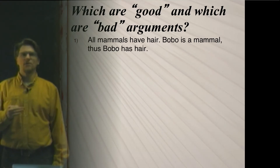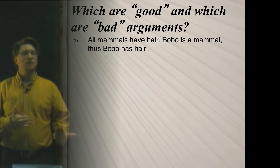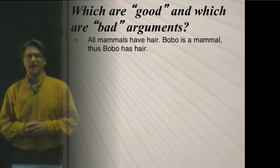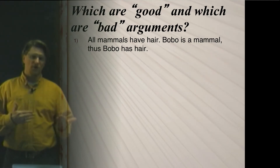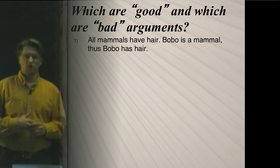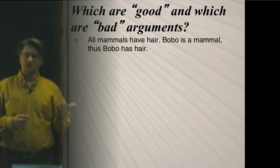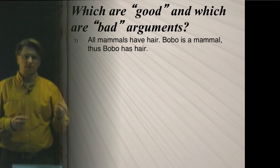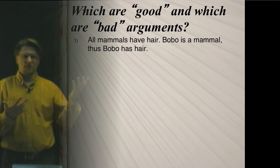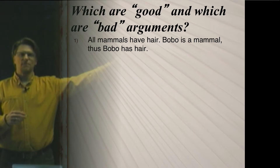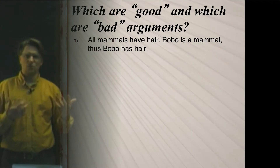We can begin with this argument: All mammals have hair. Bobo is a mammal. Thus, Bobo has hair. Now, if you're wondering whether this is a deductive or inductive argument, that's a good question. It doesn't neatly fit into the types we looked at in 1.3, though it's pretty close to a categorical syllogism. The first premise begins with 'all,' and a categorical syllogism has two premises and a conclusion, each beginning with 'all,' 'no,' or 'some.' The difference is the second premise, 'Bobo is a mammal,' doesn't begin with those words, so it's not officially a categorical syllogism, but it is close.